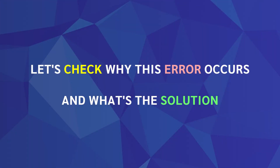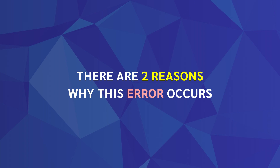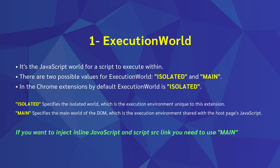Now I will show you how to fix these errors. There are two reasons why this error occurs in a Manifest version 3 Chrome extension: execution world. Execution world is a JavaScript world for a script to execute within, with two possible values: isolated and main. Isolated execution world prevents injecting inline JavaScript and script src links. Since the default execution world in Manifest version 3 is isolated, you need to set execution world to main to perform inline JS injection.